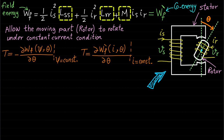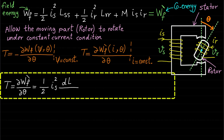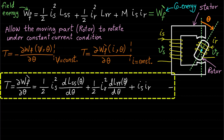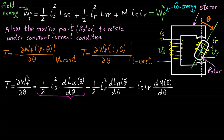Please review the previous lecture for more information. By taking the derivative of the co-energy with respect to rotor position theta under constant current condition, the torque of the double excited system is equal to the sum of three terms. The first term, ½·Is²·dLSS(θ)/dθ, represents the torque component generated because of the change of the stator self-inductance LSS(θ).